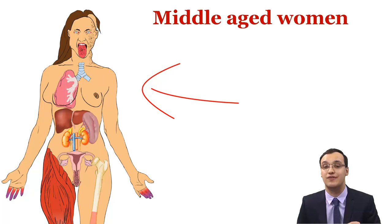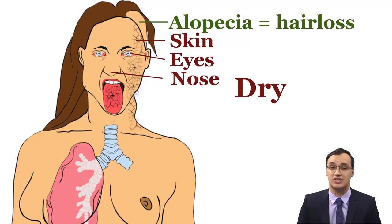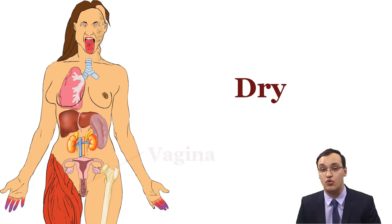We can see alopecia, which means hair loss. We can see dry skin, dry eyes, dry nose that can cause diminished smell, dry mouth, dry respiratory tract that can cause cough, and dry vagina.